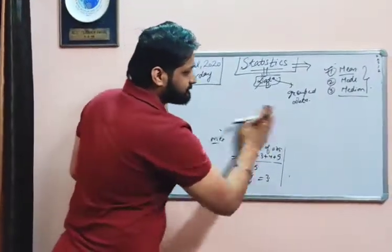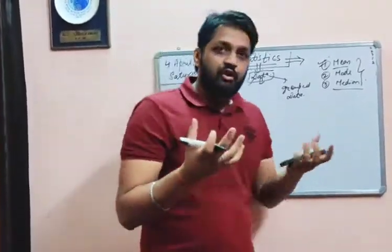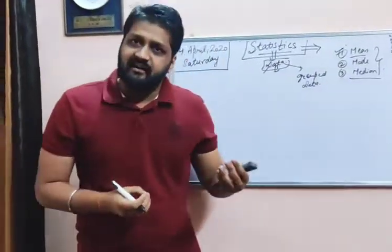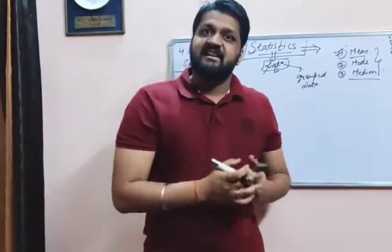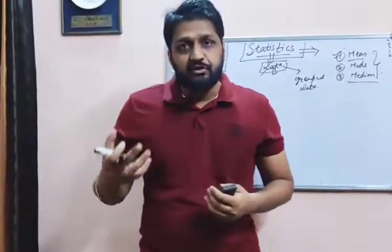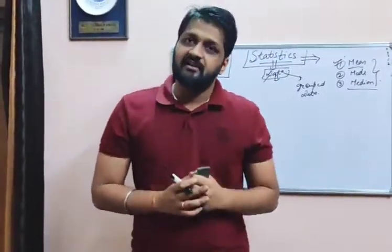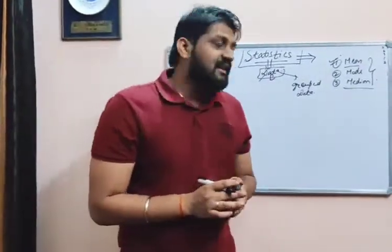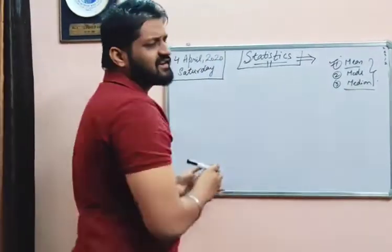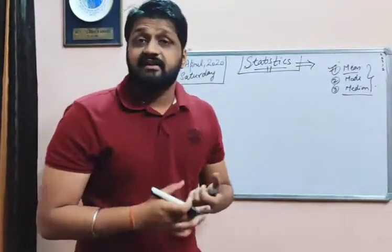Now let's see the case of grouped data. Grouped data means we are collecting groups of different observations. For example, in a particular class, the average height of some students is 160 centimeters — say 160 cm is the height of 10 students, and 162 cm is the height of the next 10 students. So we are collecting data in the form of groups or clusters, called class intervals.